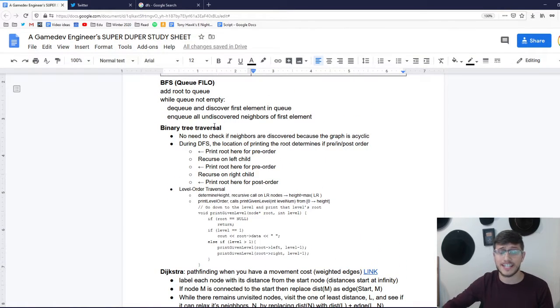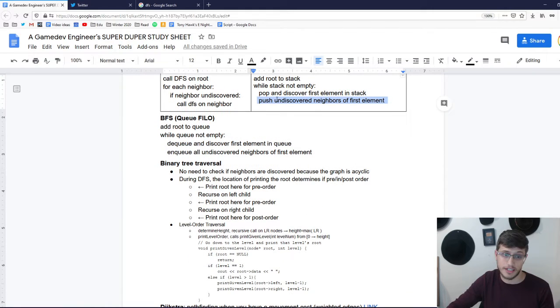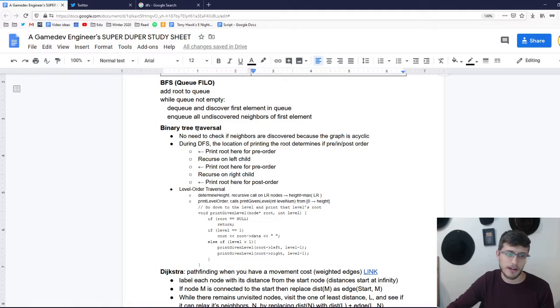Okay, so with binary tree traversal, it's actually even simpler. You don't need to worry about this idea of discovering elements, because a binary tree is acyclic. They're all going in one direction, they're all going down, and there's no two directional, there's nothing like that happening. And so what that means is when you pop and discover the first element, all of its children are going to be undiscovered by nature of a tree. So by virtue of that, you don't have to worry about discoverability at all, whereas you would with a grid or some other graph structure.